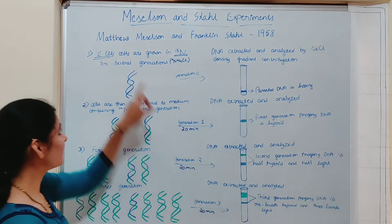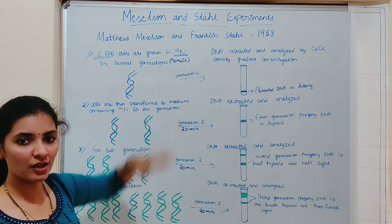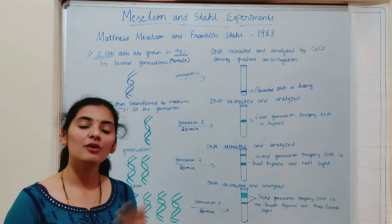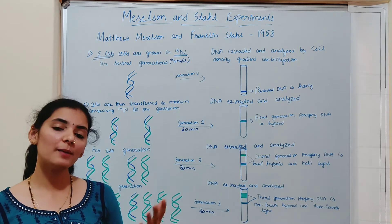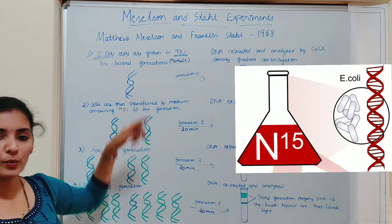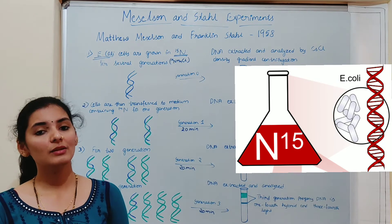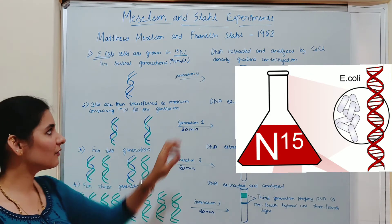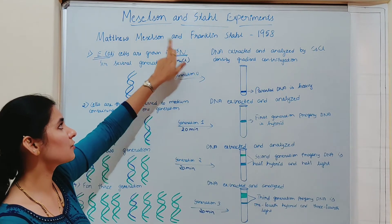In the first step, Meselson and Stahl grew Escherichia coli in a medium containing heavy nitrogen, provided in the form of ammonium chloride. They grew E. coli for several generations — meaning single E. coli divided to form 2, 2 to 4, 4 to 8, 8 to 16, and so on. As it grows for several generations, E. coli incorporates heavy nitrogen into the DNA because DNA replication requires synthesis of nitrogenous bases, and the only source of nitrogen available is heavy nitrogen, so E. coli has no other option.